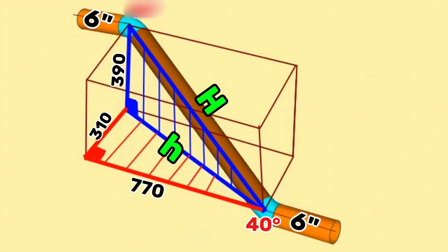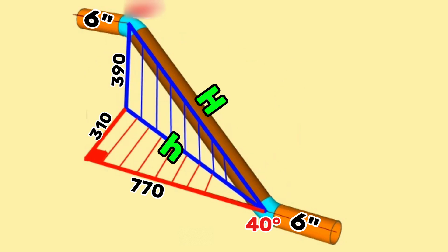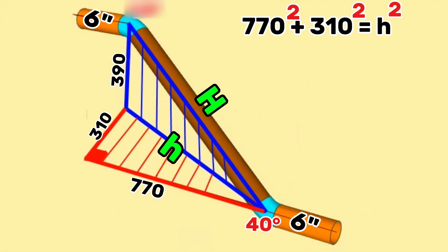Now let's begin to find the lowercase letter h, which is the hypotenuse of the horizontal right angle triangle. Let's remove the extra lines of the parallelogram to see the calculations more clearly. The perpendicular sides of this horizontal right angle triangle are 770 millimeters and 310 millimeters. We will use the Pythagorean theorem formula to calculate the hypotenuse. According to the Pythagorean theorem: 770 squared plus 310 squared equals small h squared.